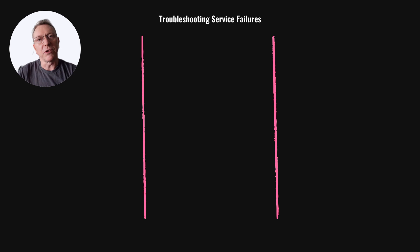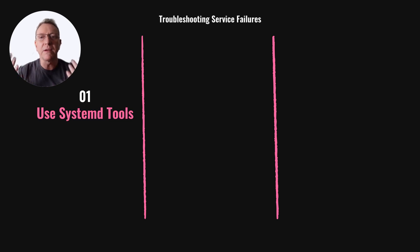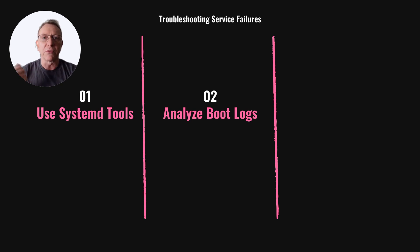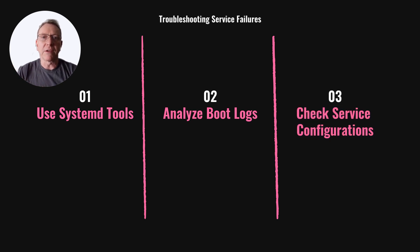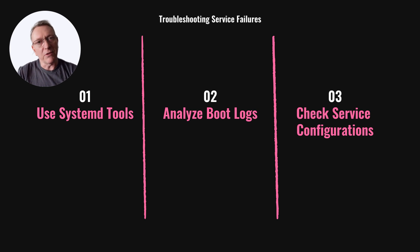Troubleshooting service failures requires using systemd tools. Start by analyzing boot logs with journalctl to identify issues. Check service configurations for errors or misconfigurations. If a service is problematic, consider masking it temporarily to allow the system to boot. This approach helps isolate the issue, enabling further investigation and resolution.